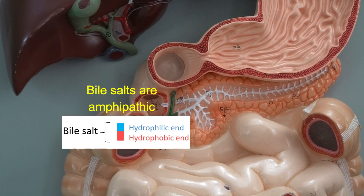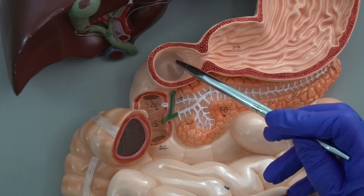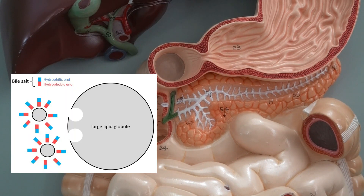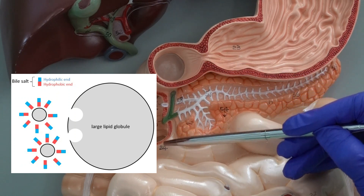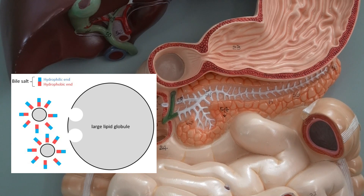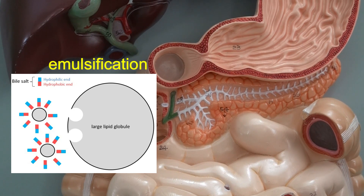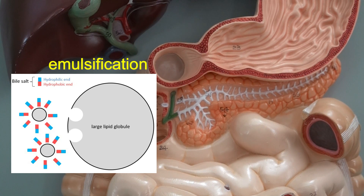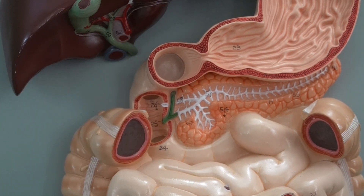An amphipathic molecule means that one region of a bile salt is hydrophilic and polar, while the other region is hydrophobic and nonpolar. Bile salts interact with large lipid globules that enter the lumen of the small intestine — from their hydrophobic region they interact with the large lipid globules, and from their hydrophilic end they interact with the watery environment inside the small intestine. The result is breaking down the large lipid globules into smaller ones. When bile salts break down large lipid globules into smaller ones, we call this process emulsification.